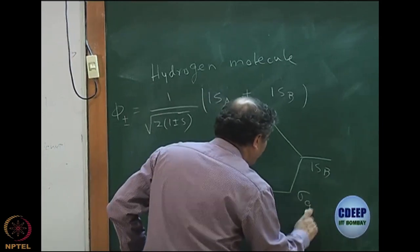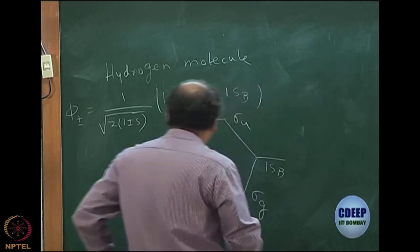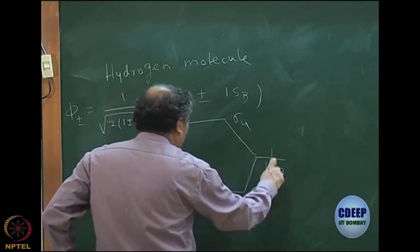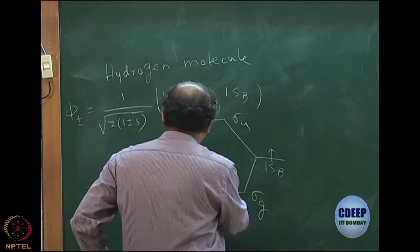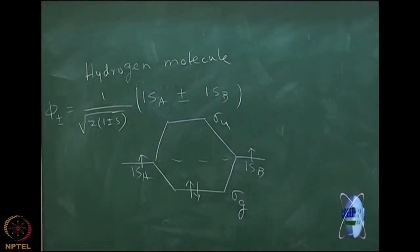This is sigma_g. If you note, this is all that you have read, and you have two electrons here originally, which are now paired here, and this determines the amount of binding.